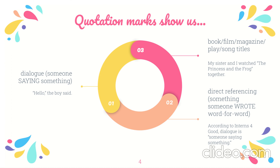For example, 'Hello, the boy said' is one way that we can use quotation marks. Another way is when we're directly referencing something — basically, if someone writes something and you copy that thing word for word, you can say that someone else said it and put it in quotation marks.